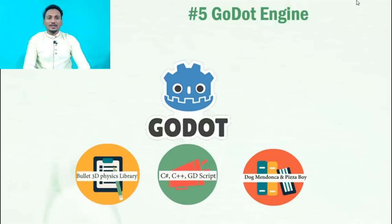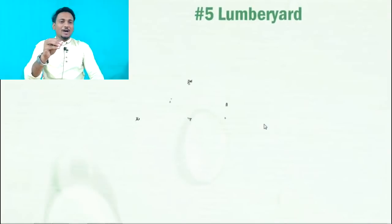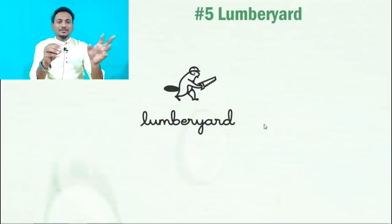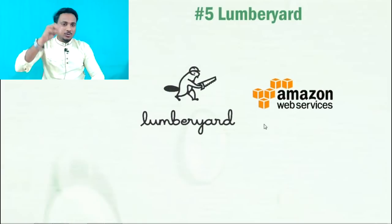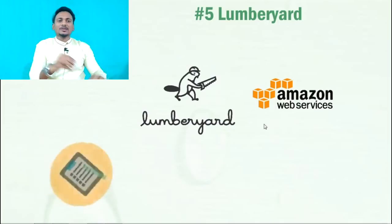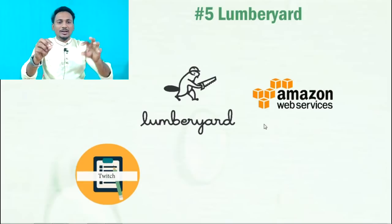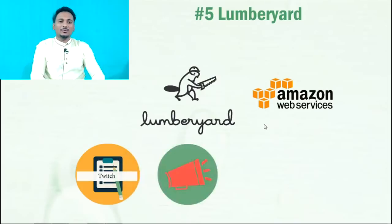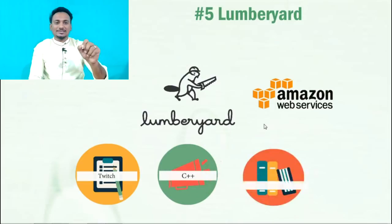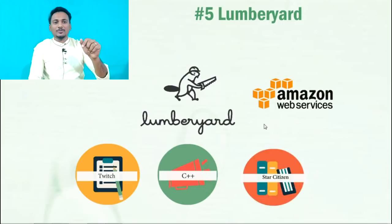For example, the game 'Dog Window' has been developed with the help of Godot Engine. The fourth game engine is Lumberyard. This engine has been developed by Amazon. You can use your own server with the help of Amazon Web Services. You can use concepts like Twitch — live streaming, live chat, and live voice — and the language used is C++.